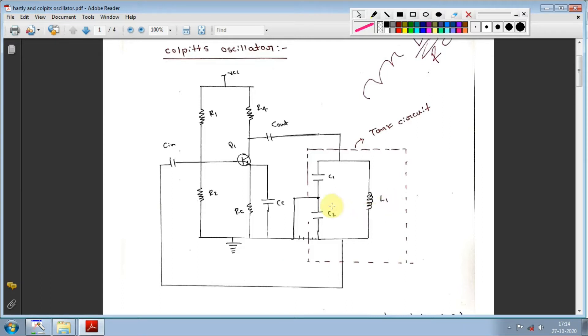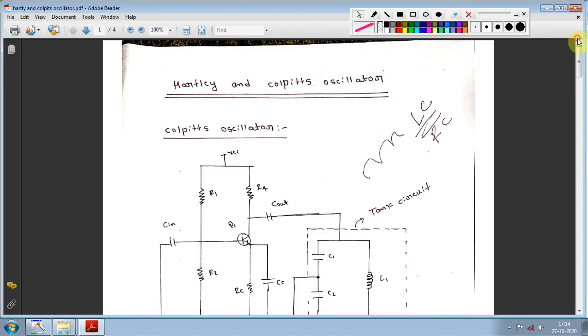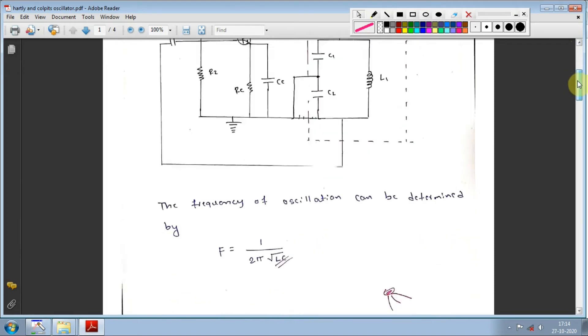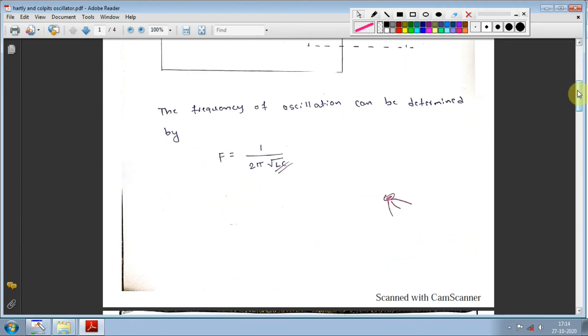In exams, they may show you a diagram or give you a statement like 'two capacitors are connected in series and one inductor is connected in parallel.' You need to identify whether it's a Colpits or Hartley oscillator based on the diagram or description.